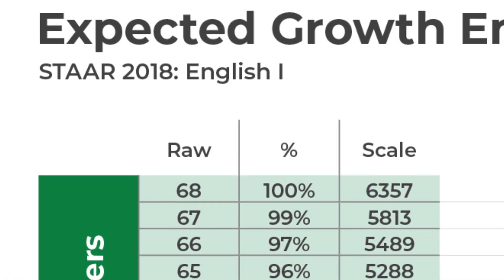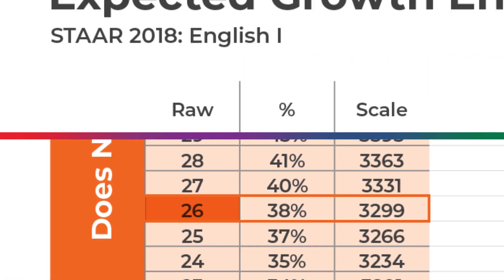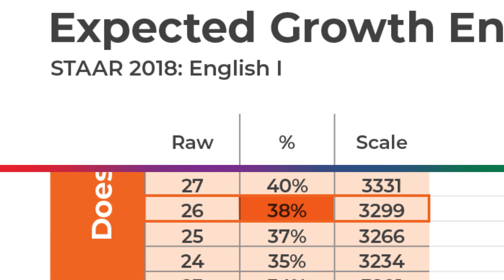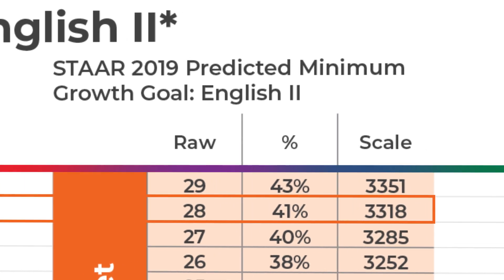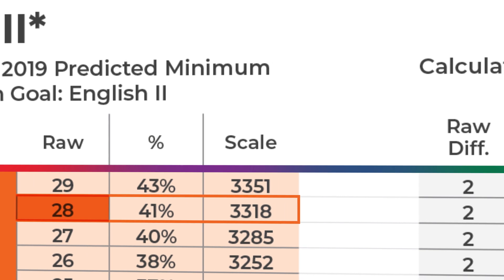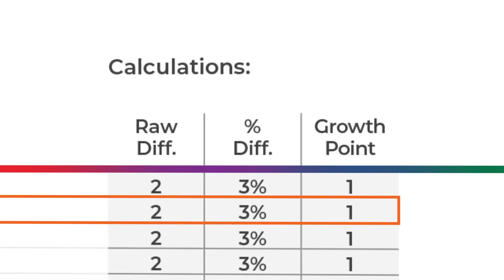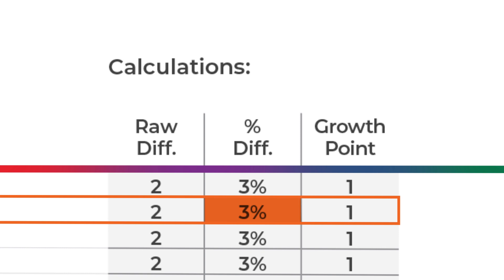We'll say that they got a raw score of 26 on their prior year STAR assessment, which means they got 38% correct with a scaled score of 3299. This year, in order to gain a growth point of one, this student needs a predicted scale score of 3318, which is 41%, and that is 28 questions correct. In the third column, you see that this student needs to answer two more questions correctly, or 3%, to earn a full growth point of one.